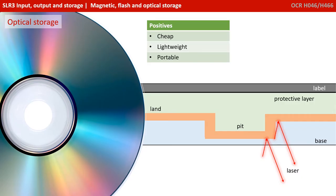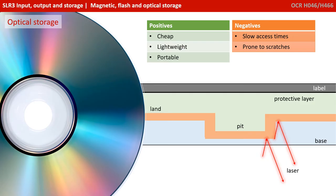In the case of writable drives — CD-RWs and DVD-RWs — the chemical composition of the disc is changed by a reversible chemical reaction. This means the data can be written many times. There are many positives to optical storage media, including being cheap to produce, lightweight, and highly portable. DVDs store more data than CDs because the pits and lands are smaller and closer together as the laser technology has increased the precision. Data is read and written from the inside of the disc to the outside in a spiral. This can make them slow devices for accessing data, and optical media is also prone to scratches.